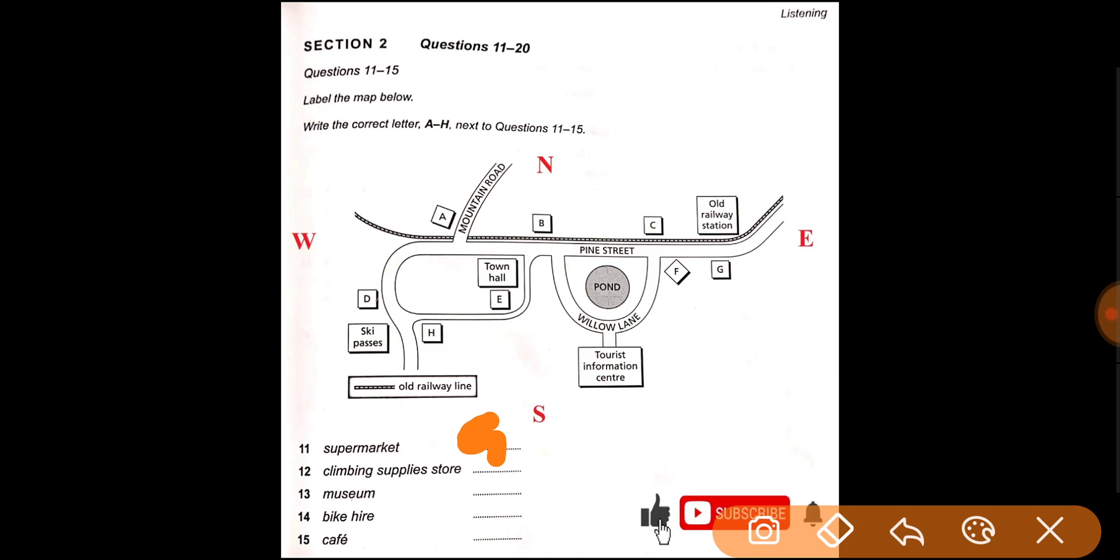Opposite the old railway station, if you're planning on doing some serious climbing and you need some equipment, we do have an excellent climbing supply store, just five minutes walk away. Turn left once you're outside the tourist information center. Take Willow Lane all the way up to Pine Street. You want to go left along here, then keep walking and go up Mountain Road on your right until you come to the next turning on the left. Head down there and you'll come to the climbing supply store.